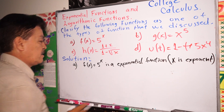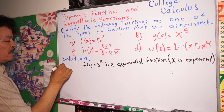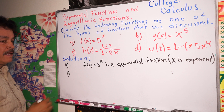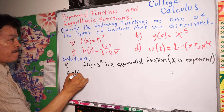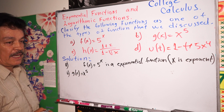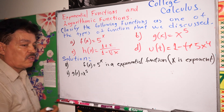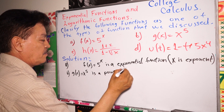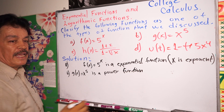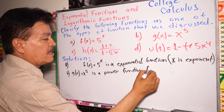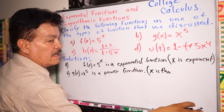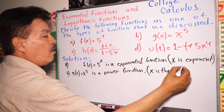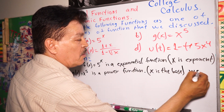Let's go to part b: g(x) equals x to the fifth power. What kind of function is this? This is a power function, because x is the base here — x is the base.